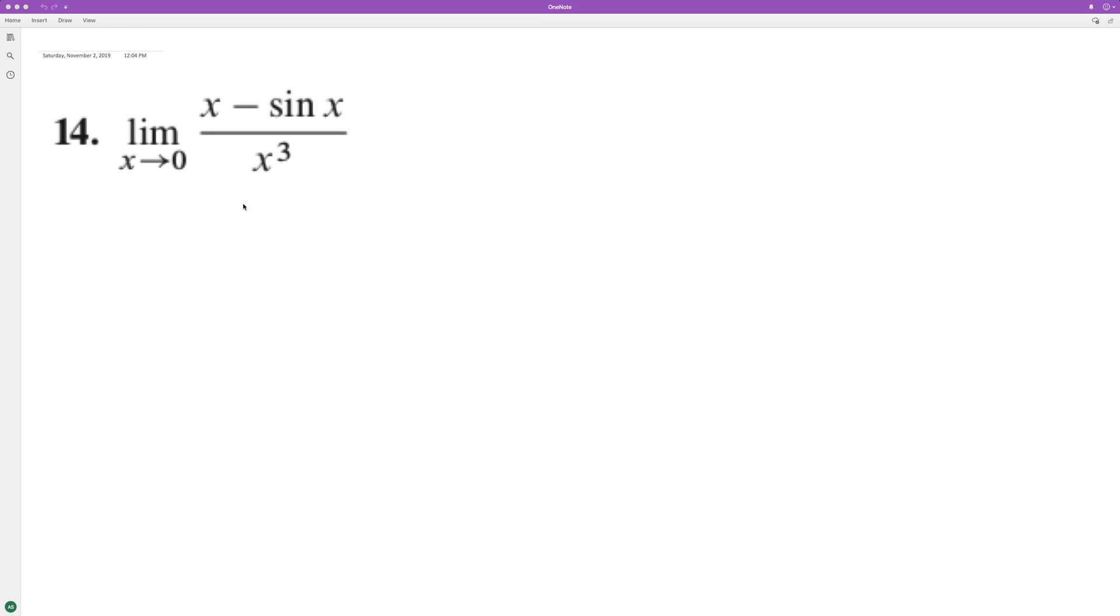The limit of x minus sine of x over x cubed. What happens here is we plug in 0 minus the sine of 0 over 0 cubed. We get 0 minus 0 over 0, which is just 0 over 0, which is indeterminate.